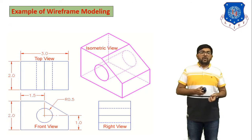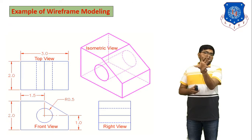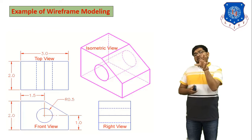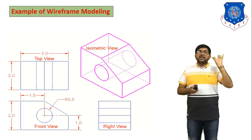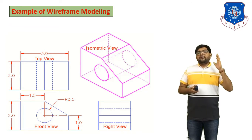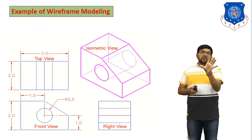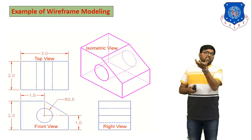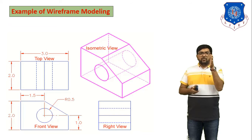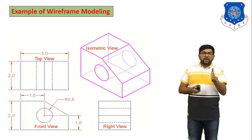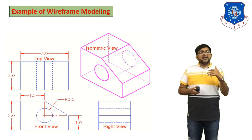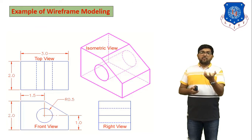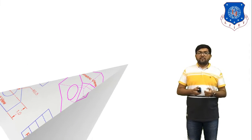This is a good example of wireframe modeling — an isometric view of an object. Based on this object we can draw the front view, side view, and top view. In this diagram we have a 3D object and we draw three views: top view, front view, and right-hand side view. This diagram is not a solid model — it is a wireframe model.